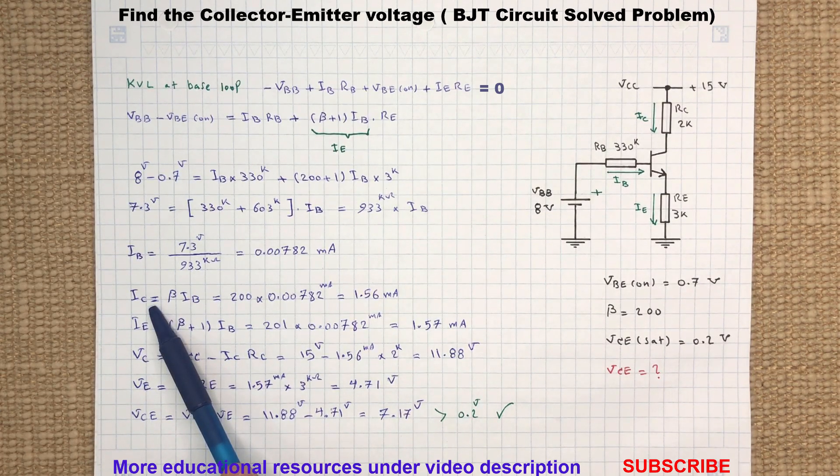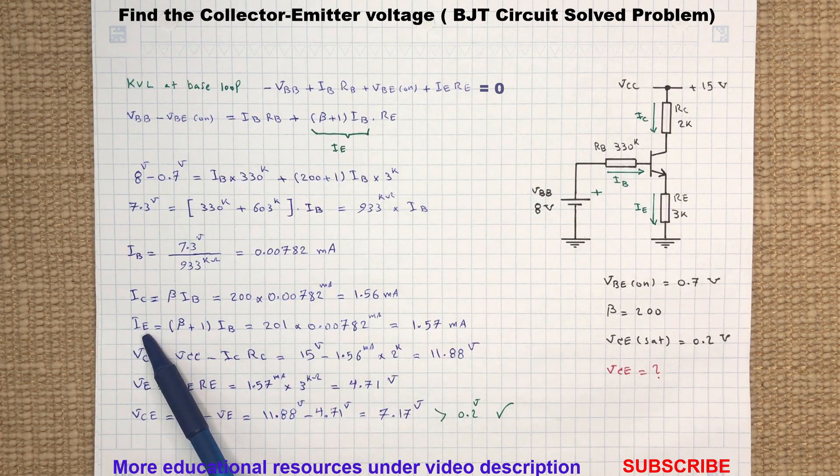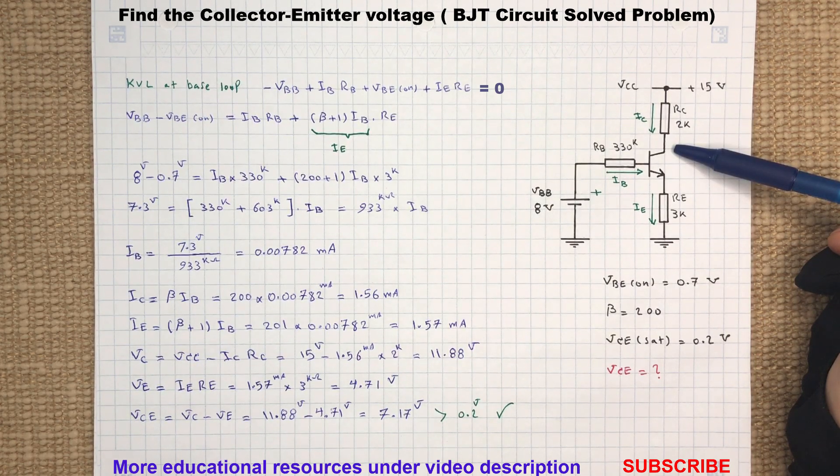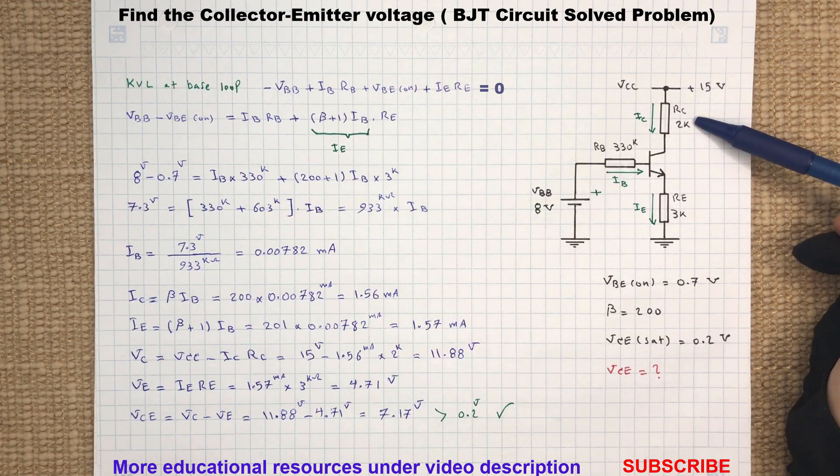The collector voltage can be determined by subtracting the 15 volt supply voltage from the voltage drop across the resistor RC. So here is how we calculate the collector voltage.